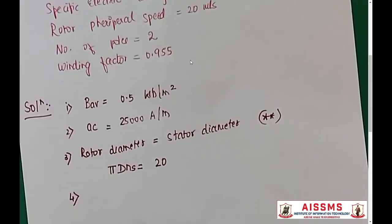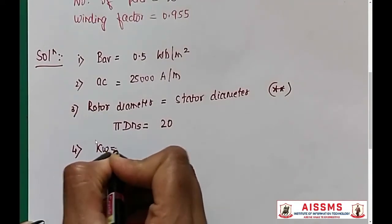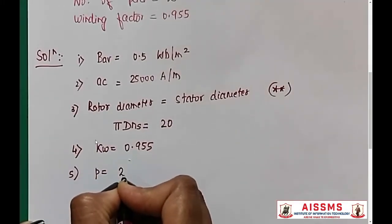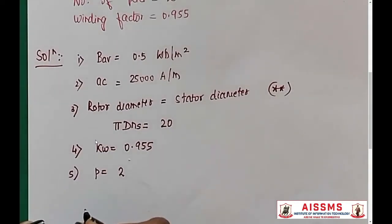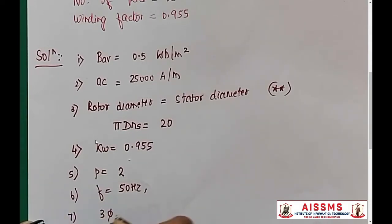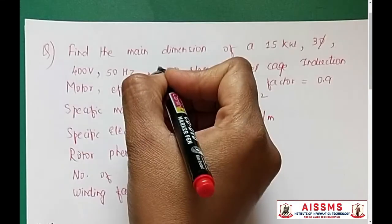Winding factor KW is 0.955. Number of poles, small p is 2. The rating of the machine is 15 kilowatt, a three-phase motor. Frequency is 50 hertz. It is a three-phase motor with the KW rating being 15 kilowatt. The speed which is given is 2810 RPM.